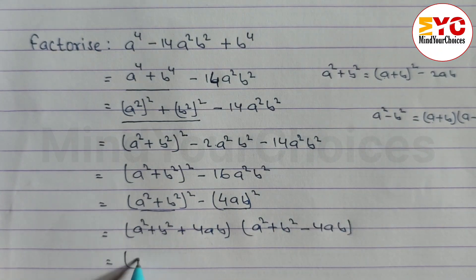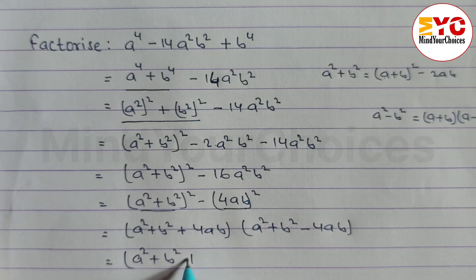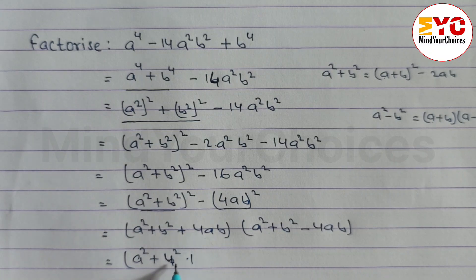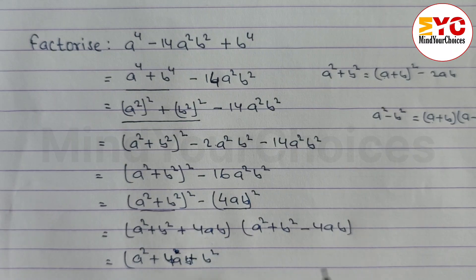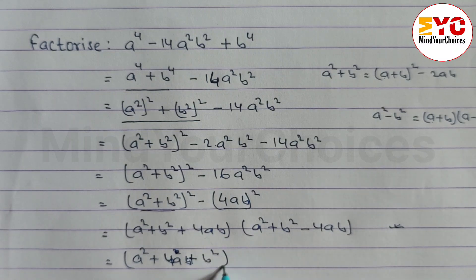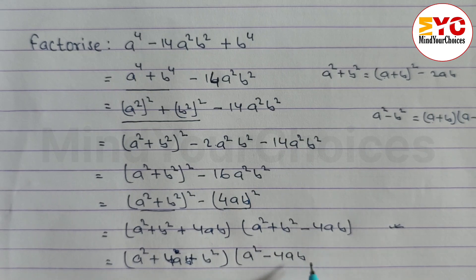Finally, we arrange the terms. We can write: a square plus 4ab plus b square times a square minus 4ab plus b square. This is your answer.